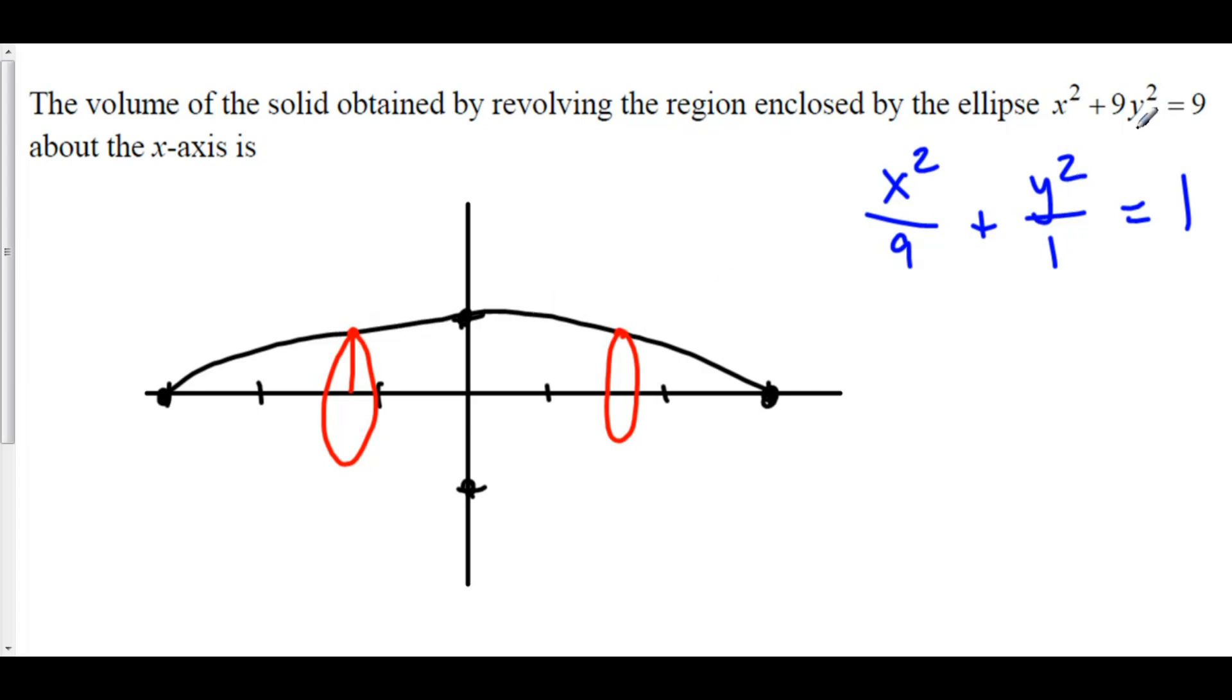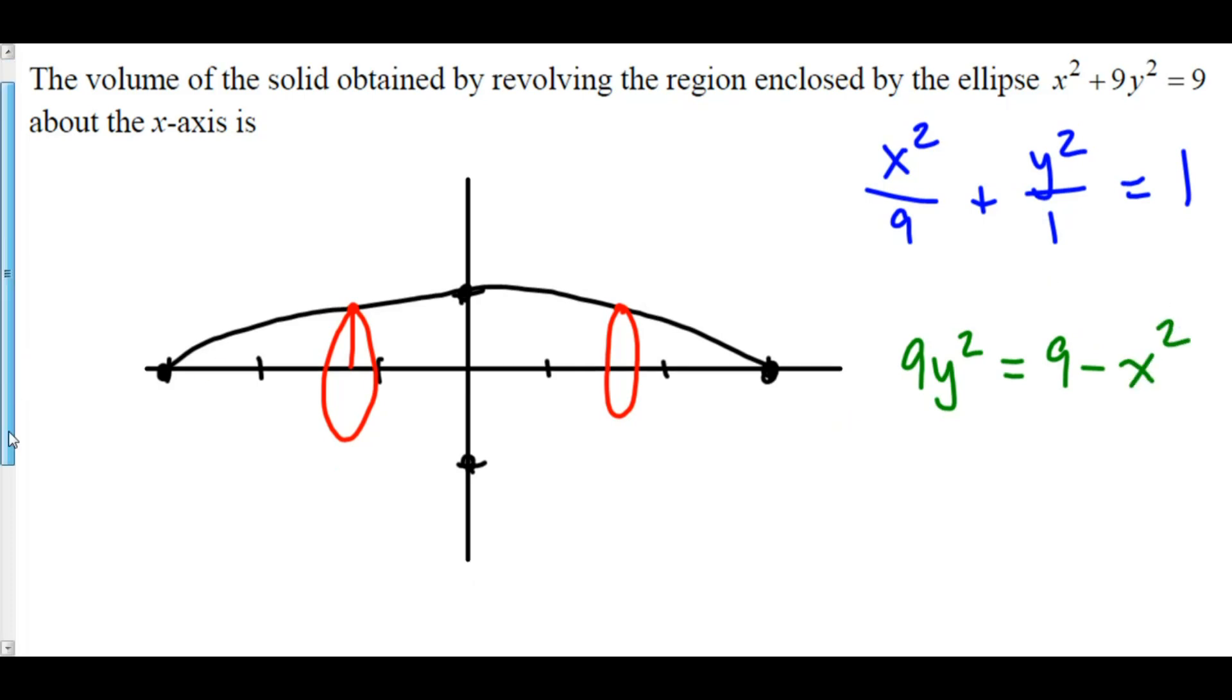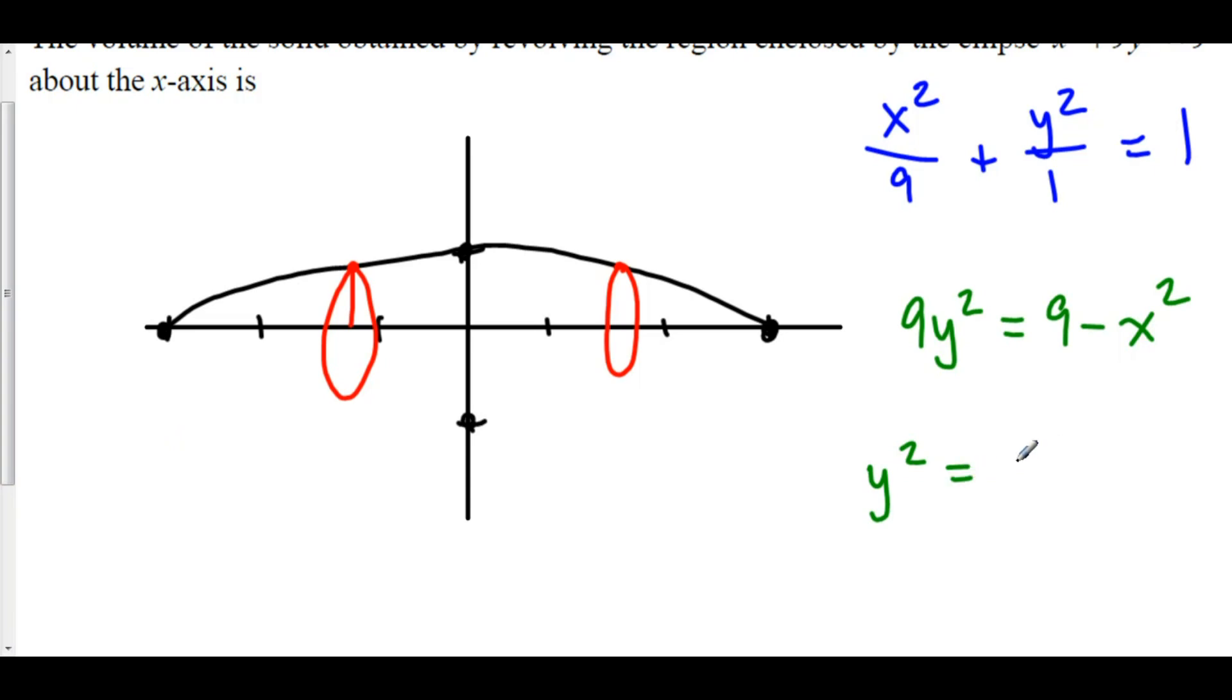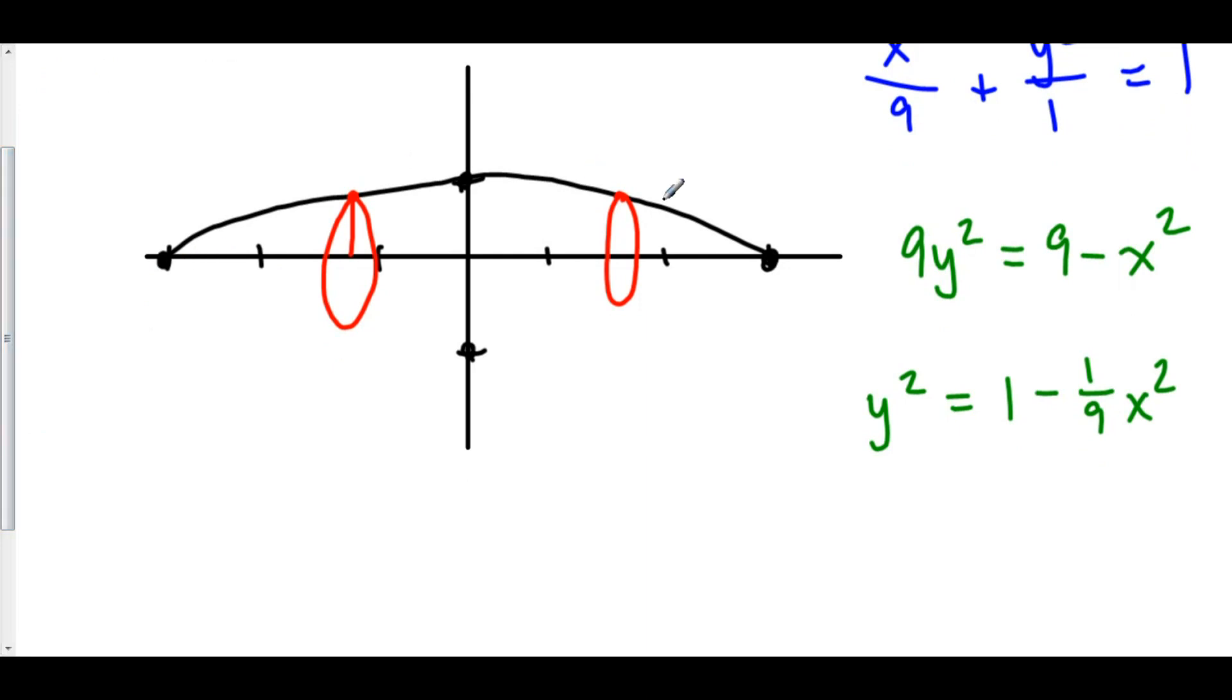Let's solve for y in terms of x. We have 9y squared equals 9 minus x squared. We can divide everything by 9. We have y squared equals 1 minus 1 ninth x squared. We are looking at the positive side of this, so we take the square root of both sides. We'll leave off the negative square root because that's beneath the x-axis. We'll just have the positive square root of 1 minus 1 over 9 x squared. This is the function value at any point x.